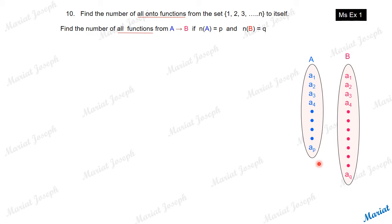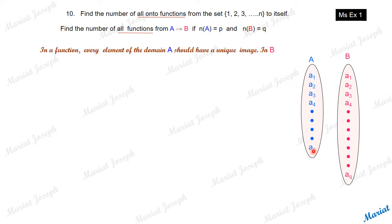As we know, in a function, every element of the domain should have a unique image. Every element of the domain — that is, each element A1, A2, A3 — should be related to exactly one image.